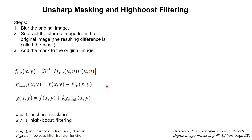In equation form, unsharp masking and high-boost filtering is written like this. Here we create the blur image by multiplying a low-pass filter H with our original image in the frequency domain, and then we take the inverse Fourier transform to get the blur image. Next we subtract the blur image from the input image to create a mask, and finally we add the mask to the input image to get our sharpened image.